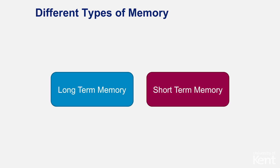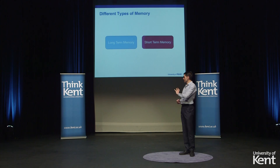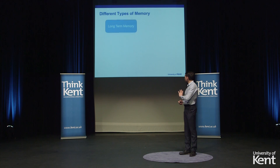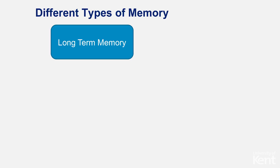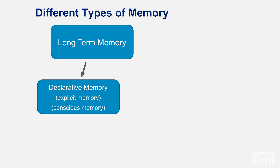We generally have two types of memories: long-term memory and short-term memory. The focus of my talk today is long-term memory, which has generally two different categories. One of them is declarative memory, sometimes called explicit memory or conscious memory. This is a form of memory that you can generally verbalize — you can talk about it and memorize things very explicitly.